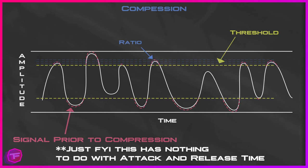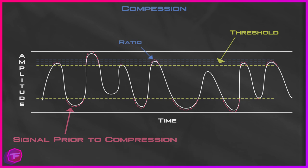On this next graph you're seeing compression in real time. On the left is the amplitude — the audio signal's volume level — and on the bottom is time. The yellow dotted line is the threshold we have set, and the red dotted line is the audio signal prior to any compression. Once that signal exceeds the threshold it gets compressed down based on the ratio you have set, meaning the volume decreases by a certain amount based on the compression ratio.